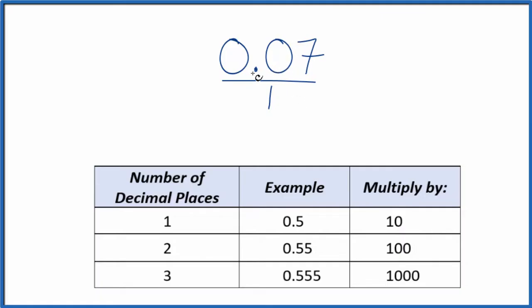Next, we have two decimal places, 1, 2. So what we can do is with two decimal places, we can multiply the numerator by 100, like this. That'll give us a whole number. So 100 times 0.07, that equals 7.